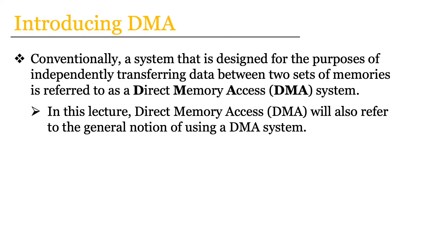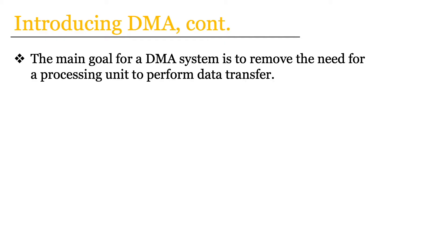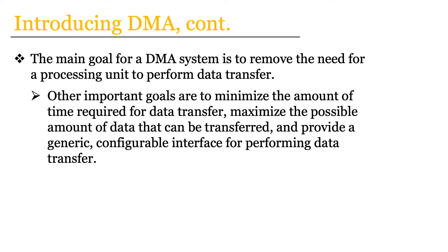In this lecture I'm going to use the term direct memory access or DMA to refer to the general notion of using a DMA system so that it's easier to explain a few things. We have already hinted that the main goal for a DMA system is to remove the need for a processing unit to perform data transfer. Some other important goals include: to reduce or minimize the amount of time required for data transfer, to maximize the possible amount of data that can be transferred, and to provide a generic configurable interface for performing data transfer.